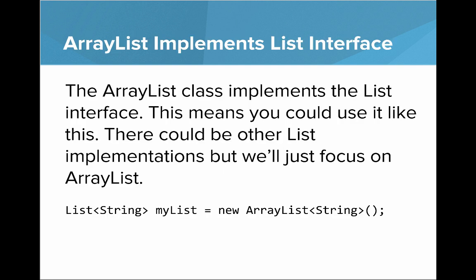It's important to know that the ArrayList class implements the List interface. This means on the left-hand side of the expression you can write the name of that interface. So you could have a List of strings called myList, and when you actually instantiate it you say it's equal to a new ArrayList of strings. There are other implementations of classes implementing the List interface, but here we'll just focus on ArrayList.